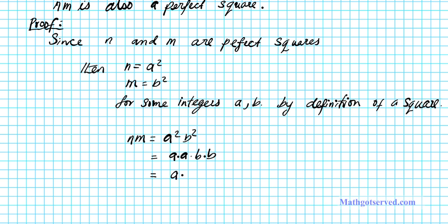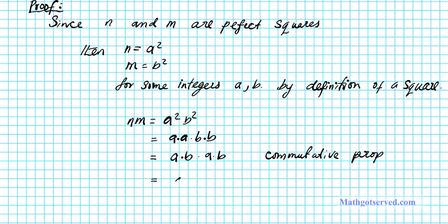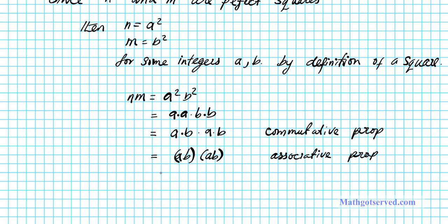Now, we know that multiplication commutes, so we can write it as a times b times a times b — commutative property of multiplication. And then we can associate them as a times b, times a times b, using the associative property of multiplication. If you associate the multiplicands, you do not change the value of the product — it doesn't matter how you associate them, you still get the same answer. Using the properties of exponents, we are multiplying two identical bases, so we add the powers. This gives us ab squared, so nm is equal to ab squared.